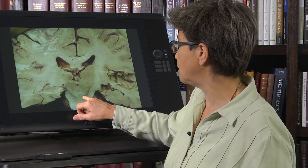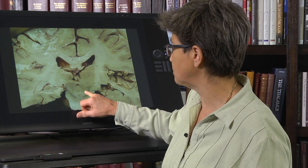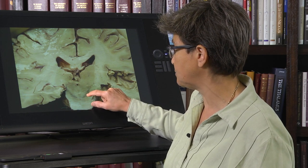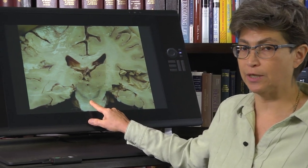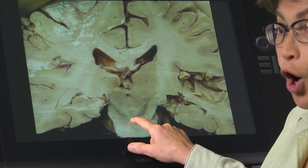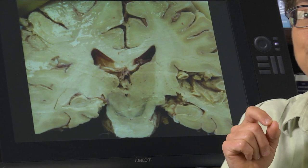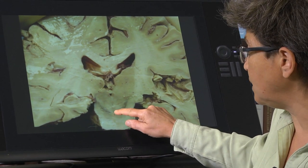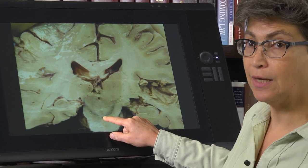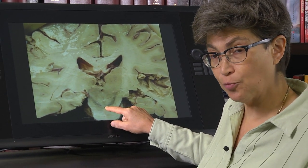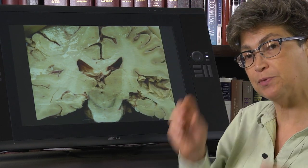In between these two areas of substantia nigra pars compacta is an area right here which is called the ventral tegmental area, or VTA. These neurons also have dopamine, although they do not have neuromelanin. These neurons project to the striatum, but to a specific part of the striatum, the ventral striatum, which is also called the accumbens.